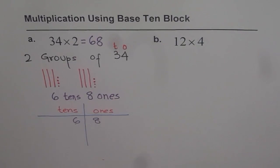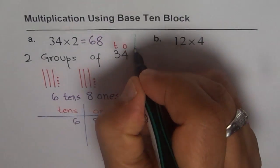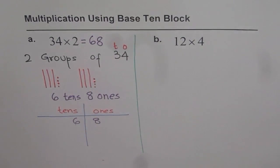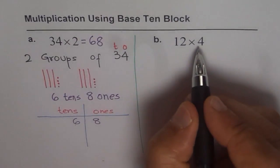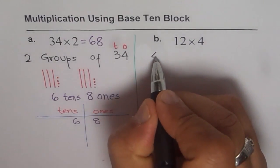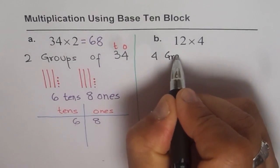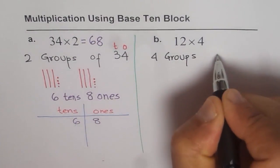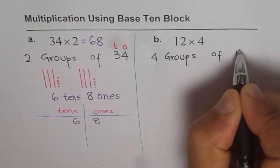Let's do it once again. And this time, we will do 12 times 4. So what you can do is, you can do along with me. So 12 times 4 means 4 groups of 12, right? 4 groups of the number 12.